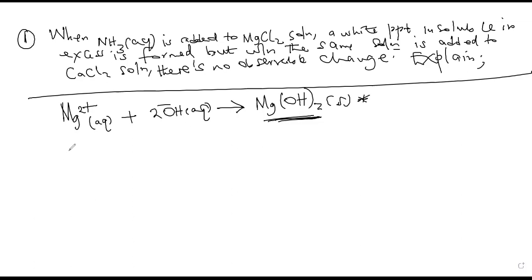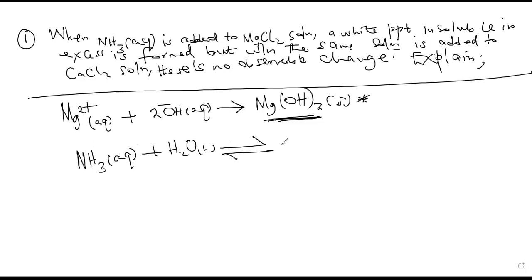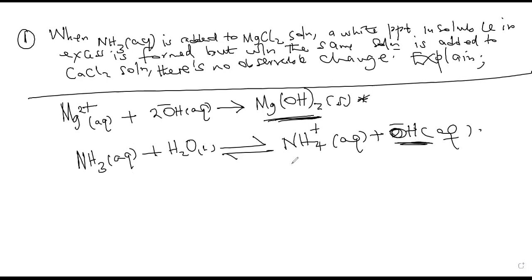Ammonia is a weak base, so it partially ionizes in water to form ammonium ions and a few hydroxide ions. Because it is a weak base, only a few hydroxide ions are produced, making the concentration of hydroxide ions low. For the ionic product of calcium hydroxide to exceed its solubility product, sufficient hydroxide ions are needed — but here that condition is not met.